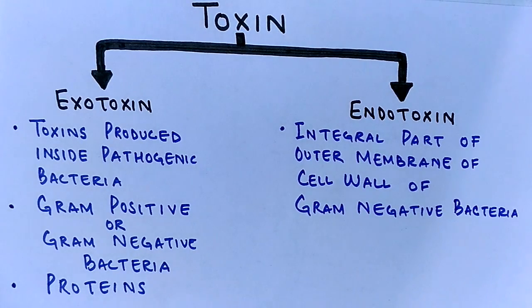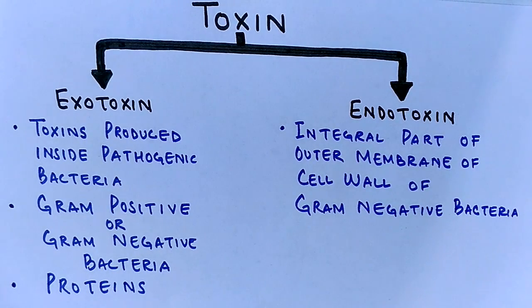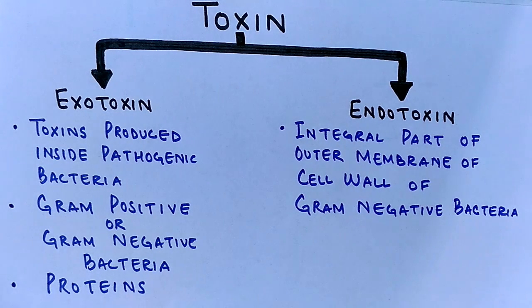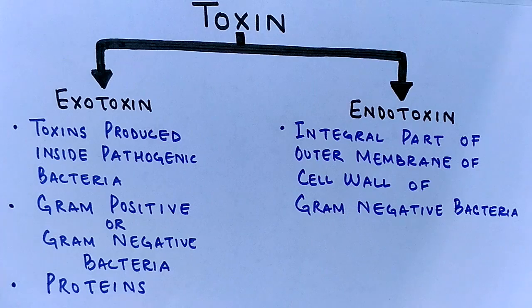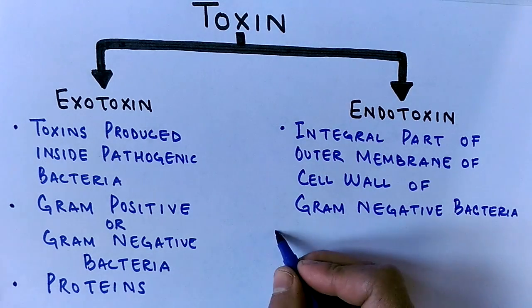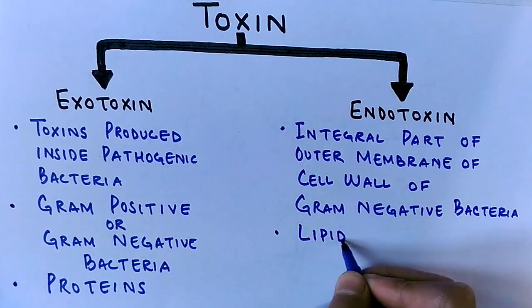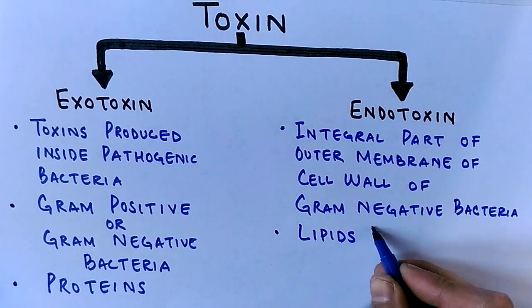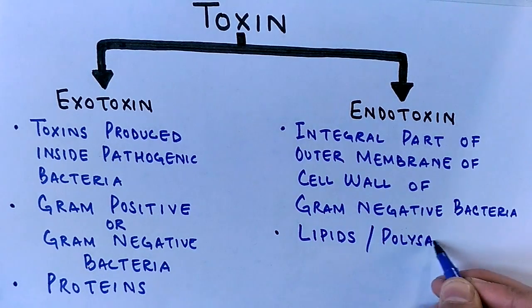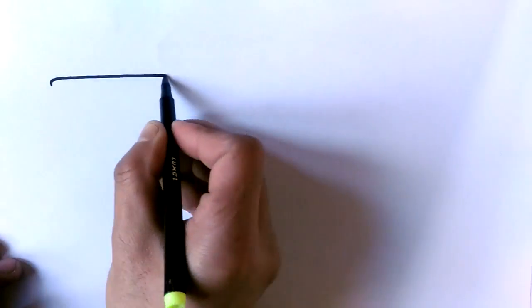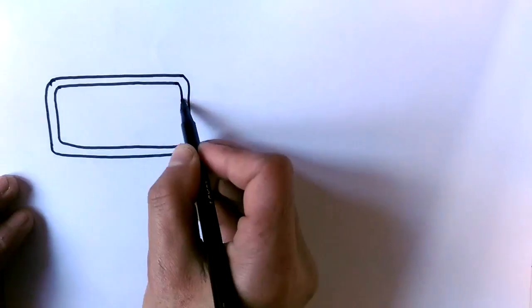Endotoxin molecules are also called LPS molecules, or lipopolysaccharide molecules, and they are present in the outer layer of the cell wall of gram-negative bacteria. Endotoxins are composed of lipids and polysaccharides.